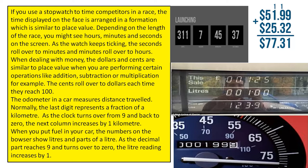When you put fuel in your car, the numbers on the bowser show litres and parts of a litre. As the decimal part reaches nine and turns over to zero, the litre reading increases by one.